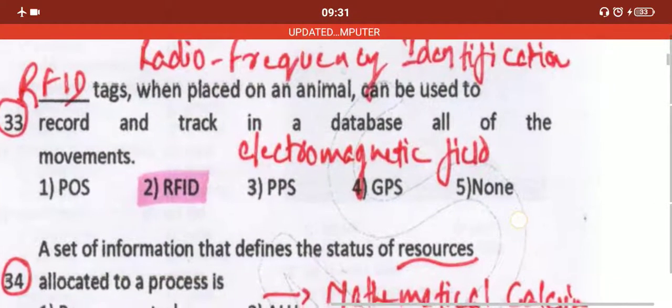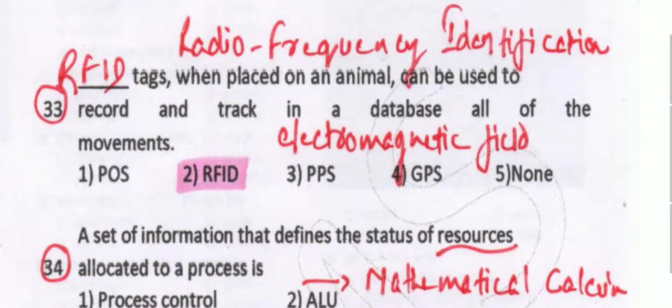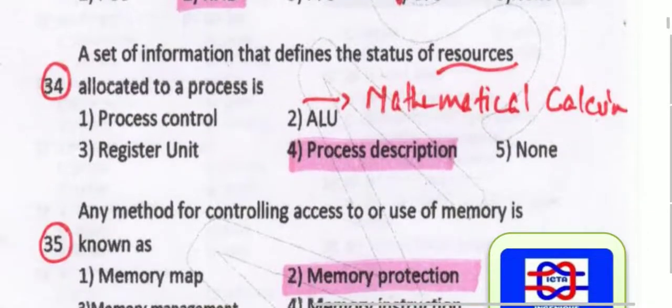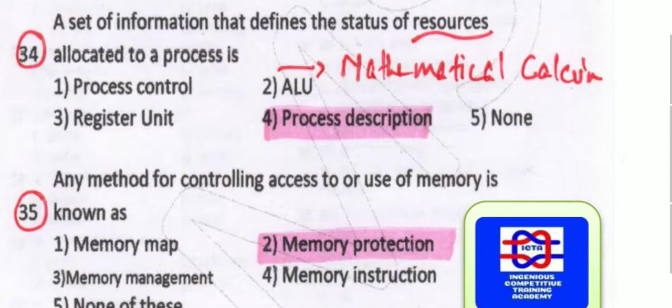RFID tags, when placed on an animal, can be used to record and track in a database all of the movements. RFID means radio frequency identification. These trackers can be placed on aquatic animals or any kind of animals. It works on the electromagnetic field and we can easily monitor their respective animals.